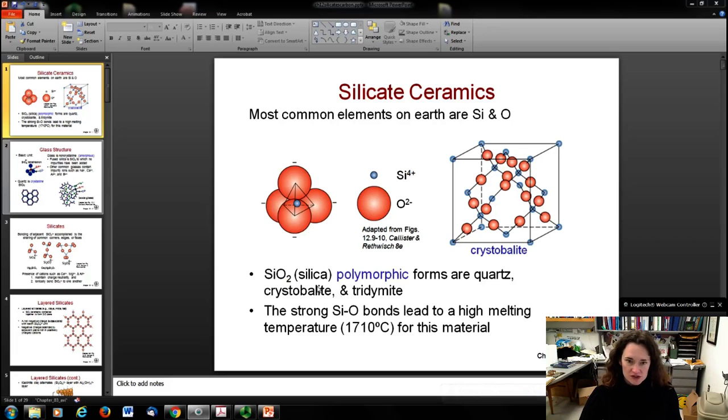cristobalite, and tridymite. You can see cristobalite right here with a complicated looking structure, maybe best viewed in three-dimensional rotation on our course website. Those strong silicon-oxygen covalent bonds lead to high melting temperatures for this material, about 1700 degrees Celsius. They also have relatively low densities because of that covalent character of the bonds.